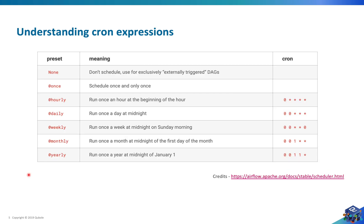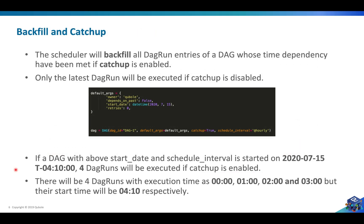When defining the schedule interval, you have the option to provide a cron expression. If you have a very complicated scheduling interval, you can use a cron expression, but in simpler cases you can use the presets that are provided by default. You can head to the provided link to understand what these presets mean. For example, hourly means each DAG run will be created after an interval of one hour, and weekly means a DAG run will be created once a week. Using presets saves time and helps ensure you don't have any bugs in your DAG file.